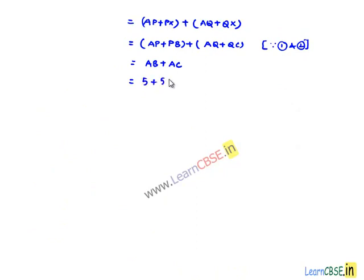AB is 5 centimeters and AC is also 5 centimeters, so 5 plus 5 equals 10 centimeters. Therefore, the perimeter of the given triangle is 10 centimeters.